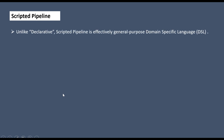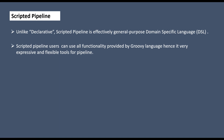Now let's move to the scripted pipeline. Unlike declarative, scripted pipeline is effectively a general purpose domain-specific language (DSL). Scripted pipeline users can use all functionality provided by Groovy language, making it a very expressive and flexible tool. As mentioned earlier, Groovy is the foundation of Jenkins pipeline, which is why scripted pipeline completely supports Groovy — whatever syntax comes under Groovy, you can use inside the scripted pipeline.